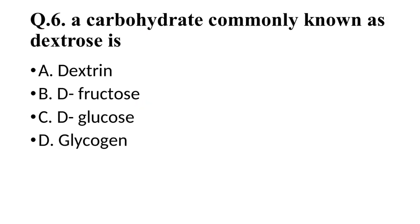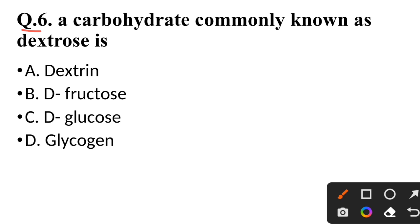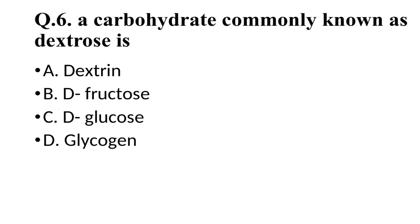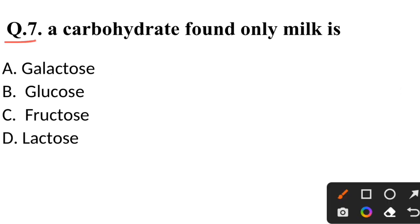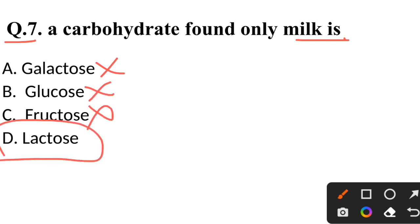Question 6: A carbohydrate commonly known as dextrose is — correct answer is D-glucose. Question 7: A carbohydrate found in milk is — correct answer is lactose.